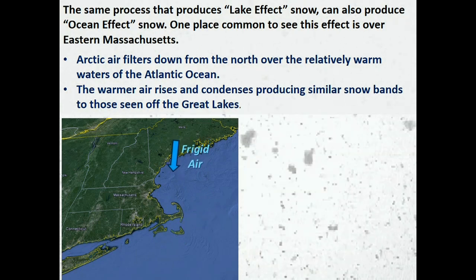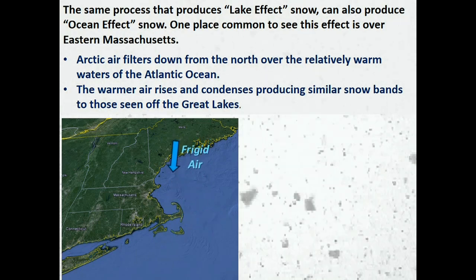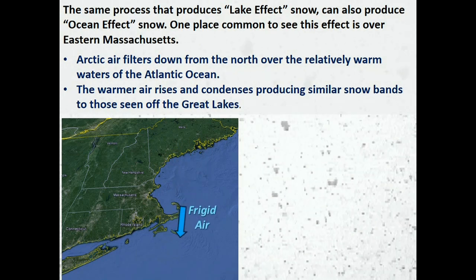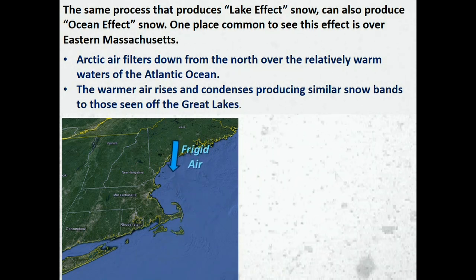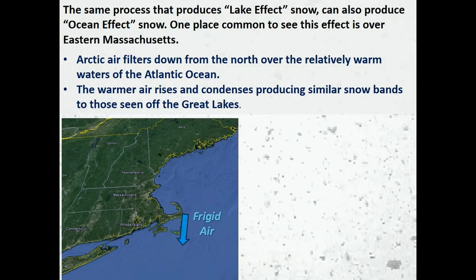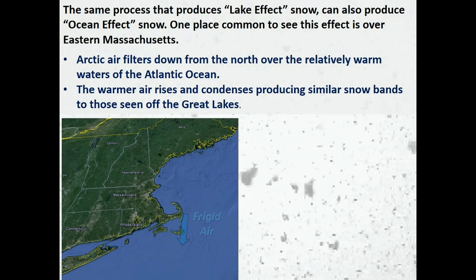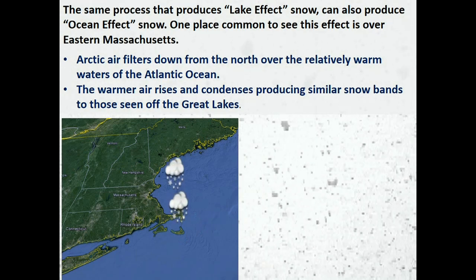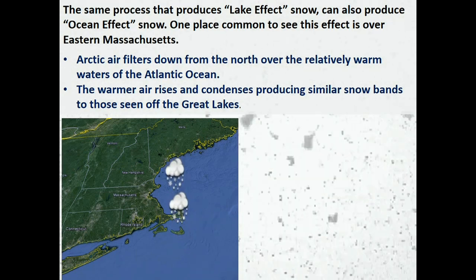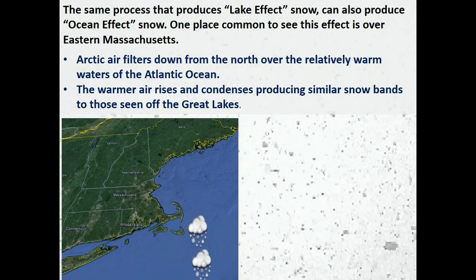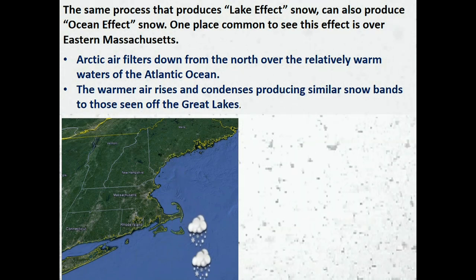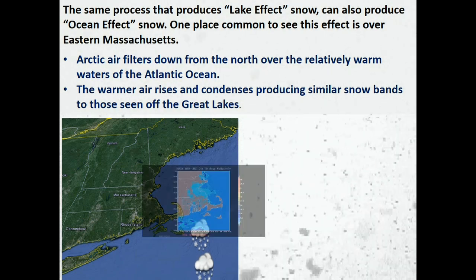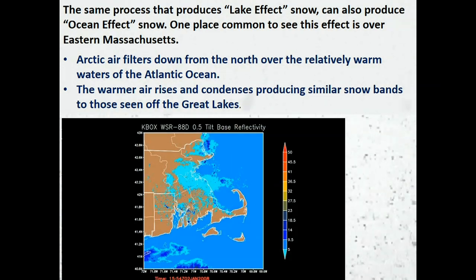The same process that produces lake effect snow can also produce what is known as ocean effect snow. One place common to see this effect is over eastern Massachusetts. Arctic air filters down from the north over the relatively warm waters of the Atlantic Ocean. The warmer air rises and condenses, producing similar snow bands to those seen off the Great Lakes.